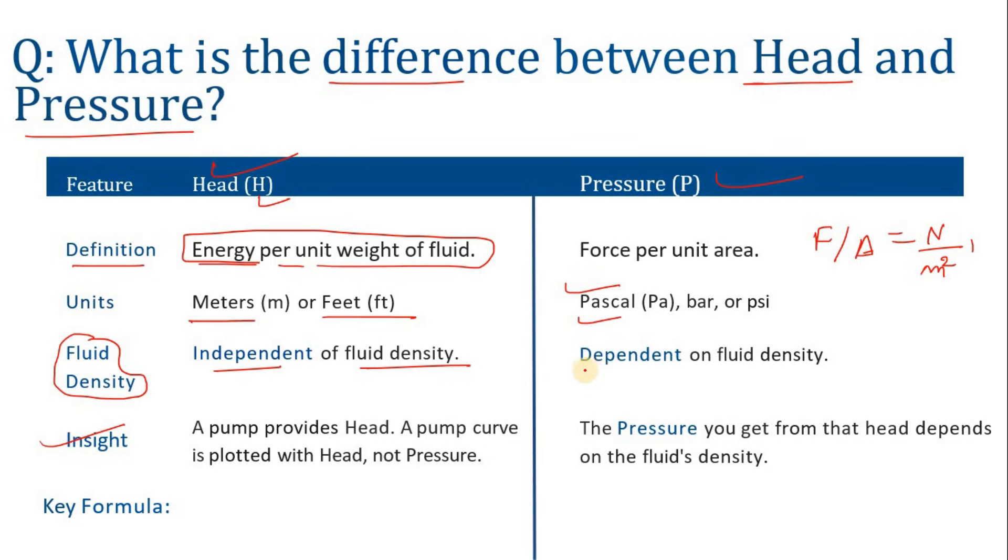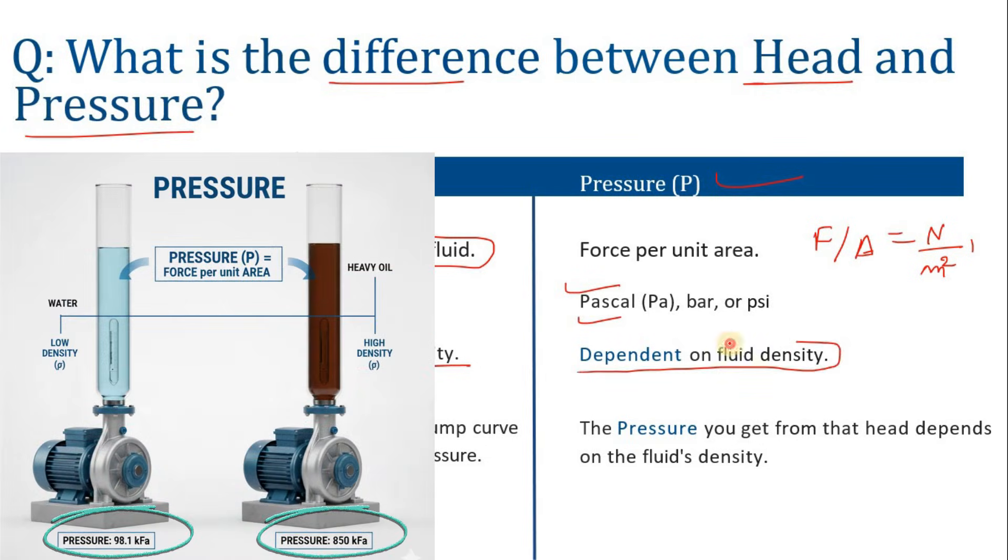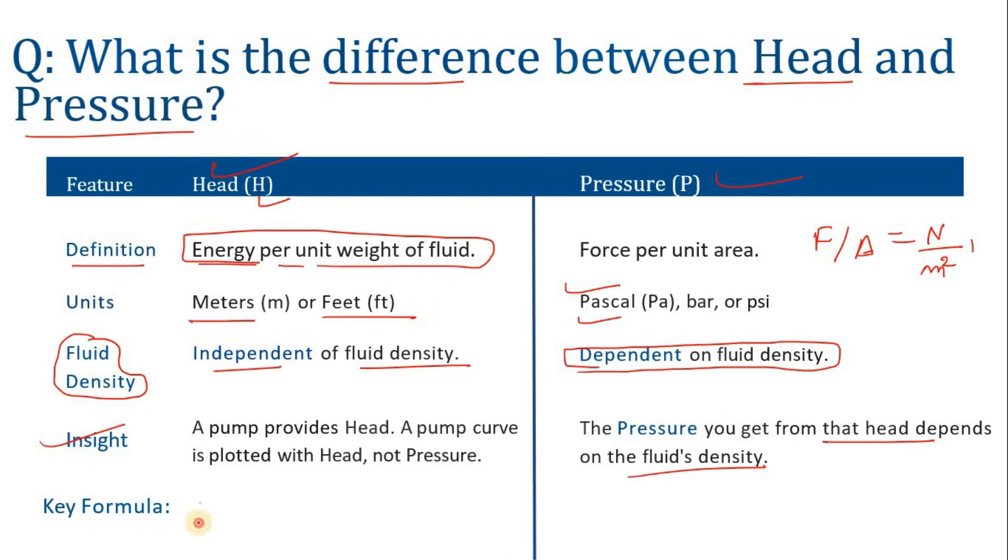It is dependent on fluid density. The pressure will be dependent on the fluid density. So the pressure you get from that head depends on the fluid's density. How? You can simply see here: P equals rho g H. This is the formula.